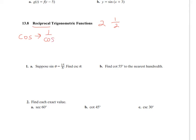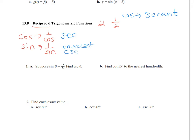Instead of saying the reciprocal of cosine, we call this the secant function. So secant goes with cosine. The reciprocal of sine is 1 over sine, and we call that the cosecant function. The shortened form is CSC. So cosecant is 1 over sine.